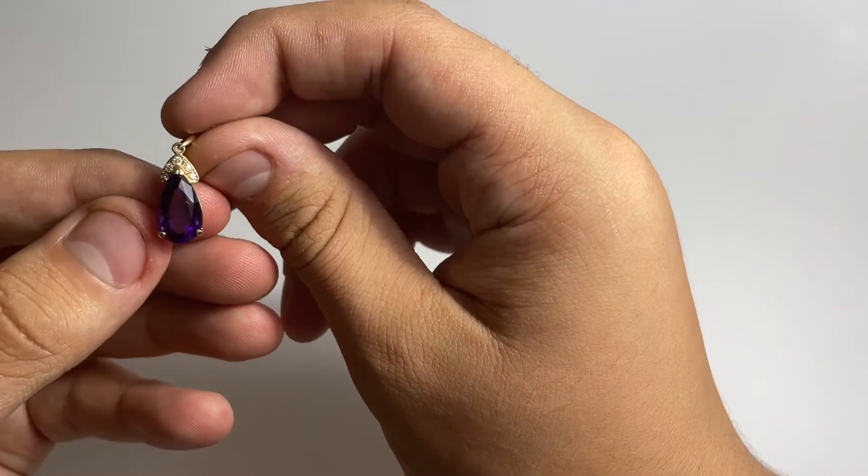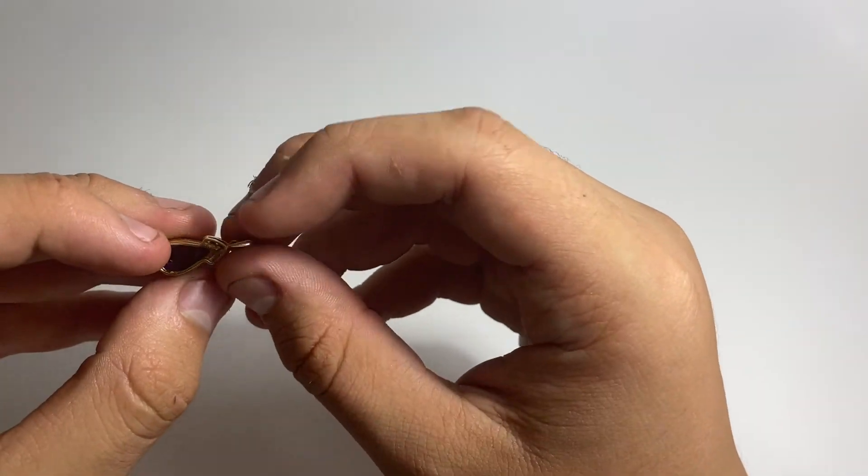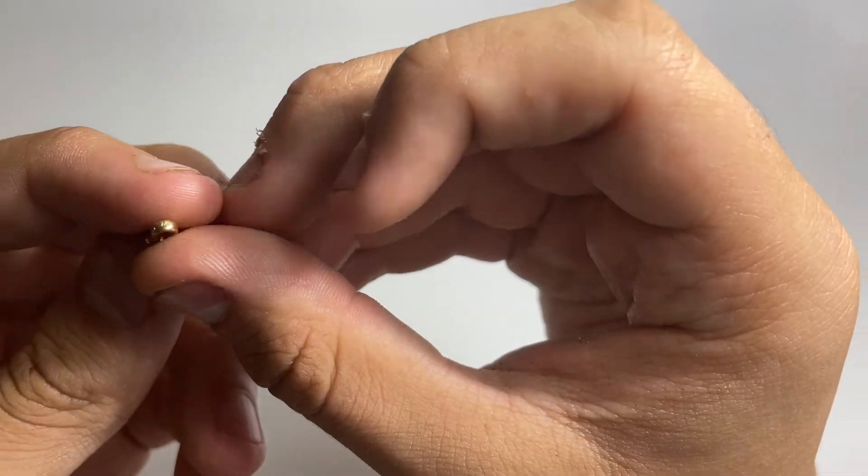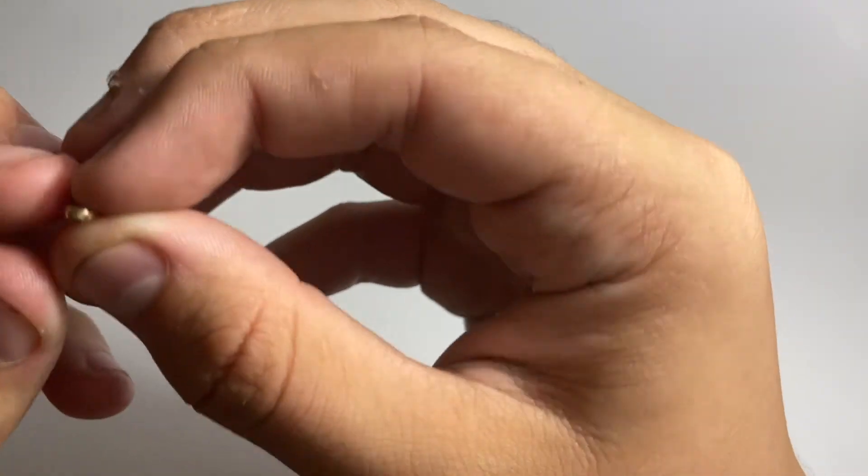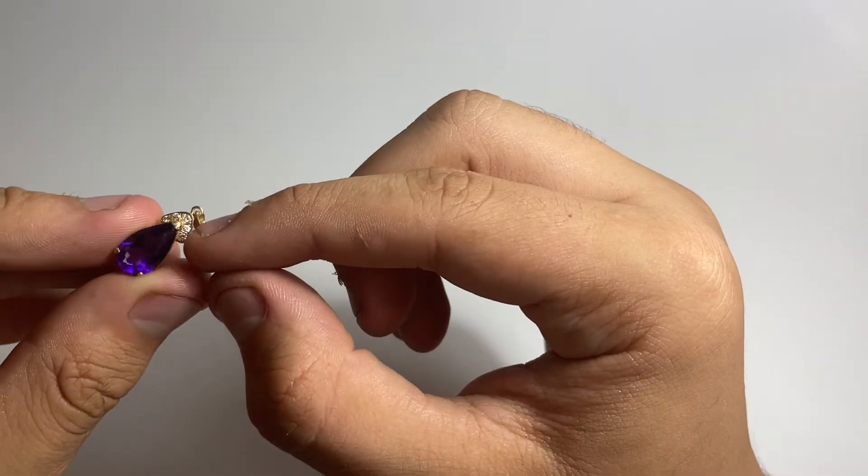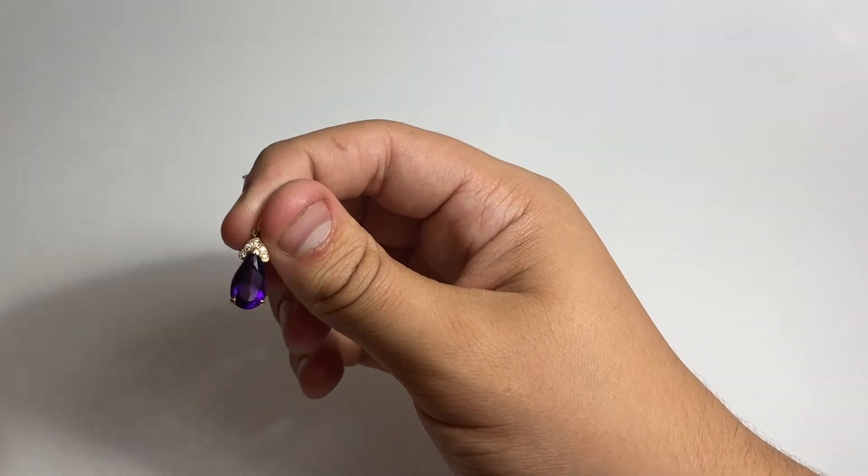The next piece here is this, this one looked like costume at first, just by the way the stones were set on the top, but it's not, it's actually 14 carat. Stamped 14k up there, and these are diamonds right there, and I'm assuming this is an amethyst, so that's the second gold piece.